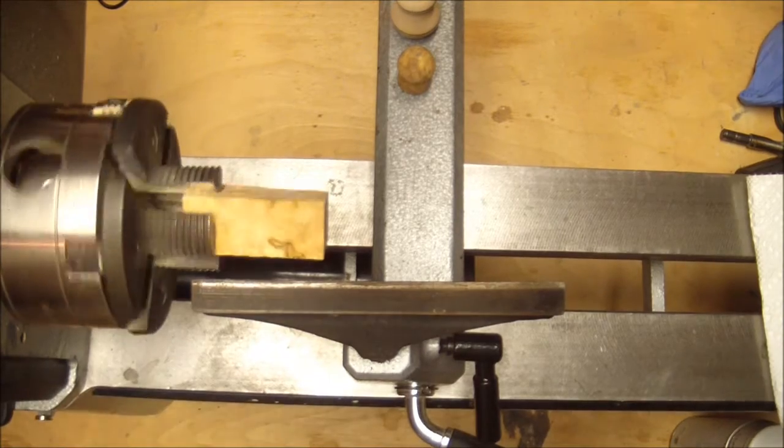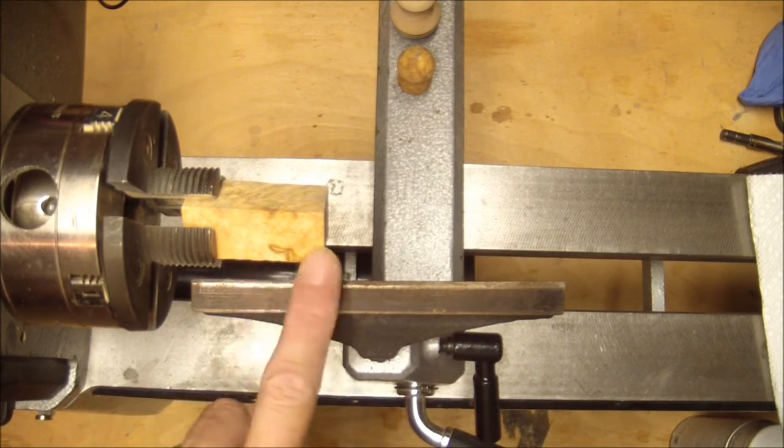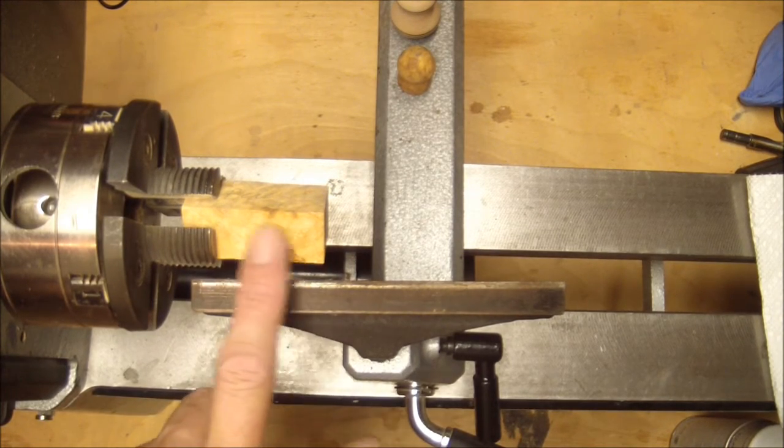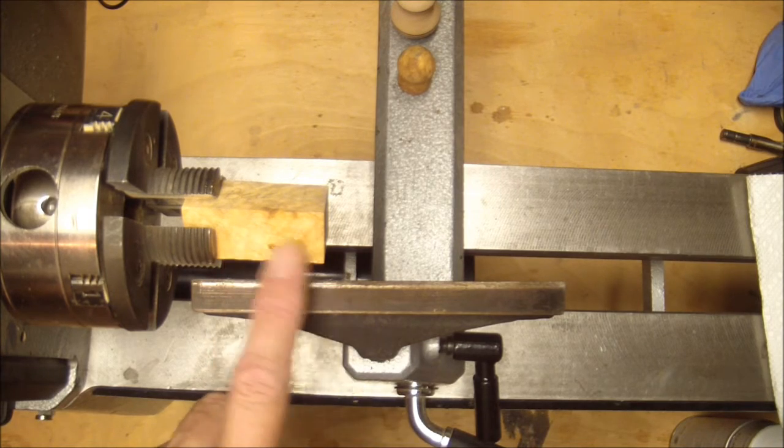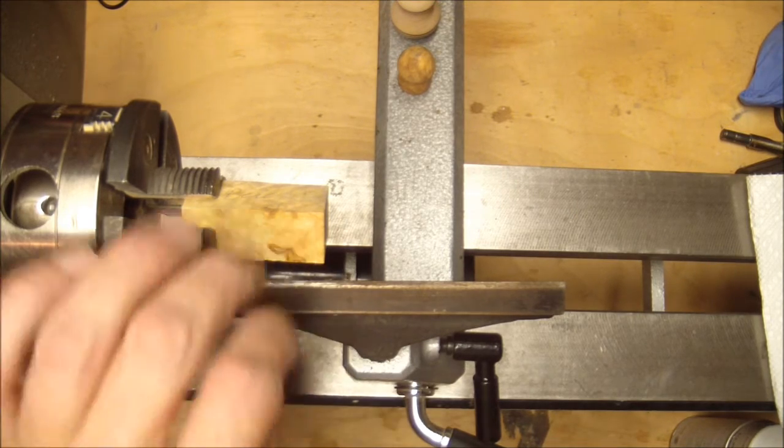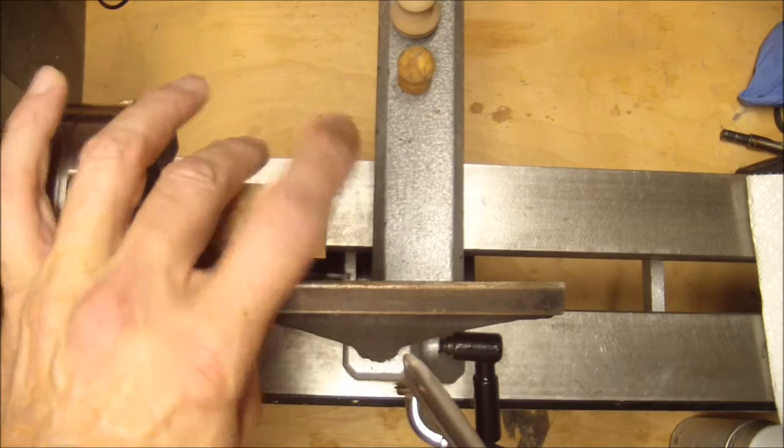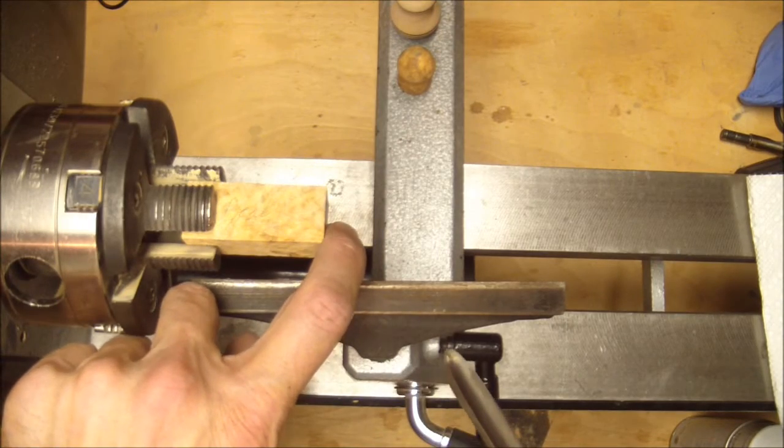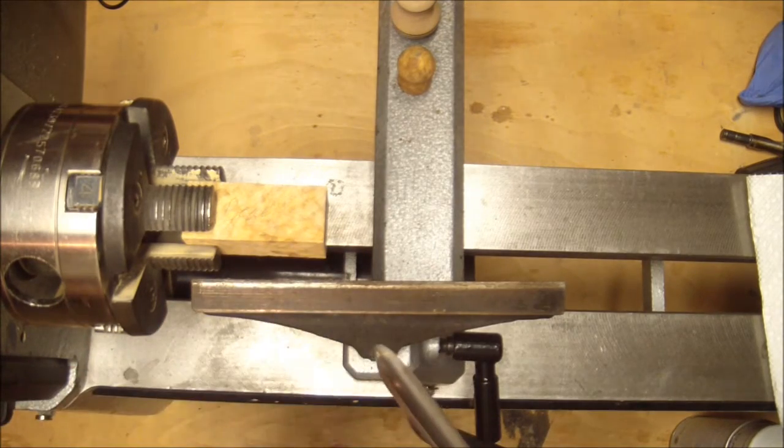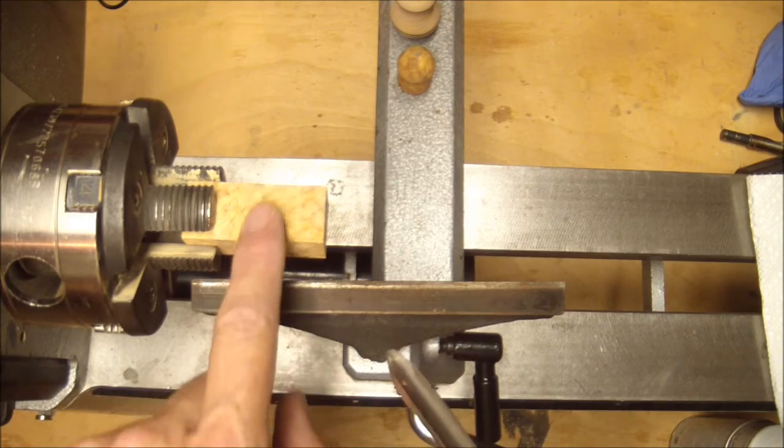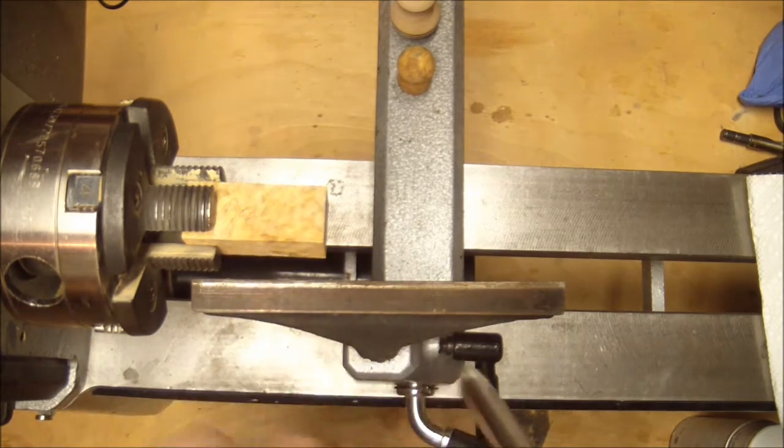And the first thing we'll do... Okay, that looks like it's running good. So the first thing we'll do is we'll just rough this into the basic shape. We'll knock the corners off of it and get sort of the basic mushroom shape. Then we'll drill the hole in the end. And then we'll finish the bottom, the stem of the mushroom.